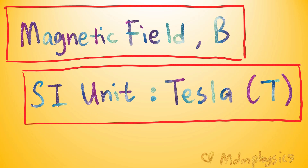Before ending this video, let's talk about the mathematical symbol and SI unit for magnetic field. The symbol for magnetic field is capital B, and the SI unit is Tesla, written as capital T.